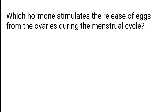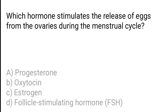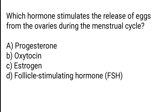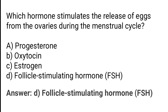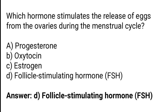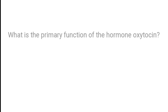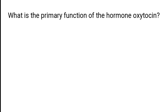Which hormone stimulates the release of eggs from the ovaries during the menstrual cycle? Progesterone, oxytocin, estrogen, follicle stimulating hormone (FSH). The correct answer is option D: follicle stimulating hormone, FSH.